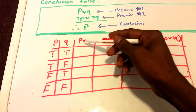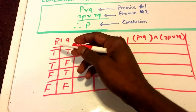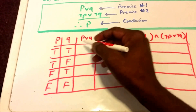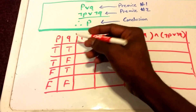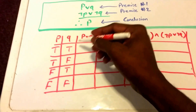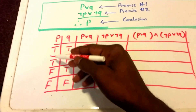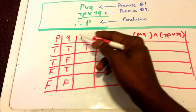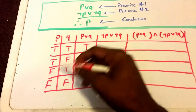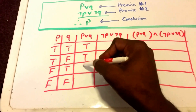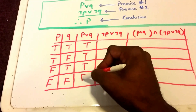So now we get P or Q. If P is true, then this makes the statement true regardless of what Q is, so we get true or true — we get true. Here P is true, Q is false, so we get true or false — we get true. False or true — we get true. And then false or false is false.